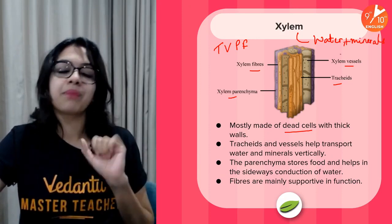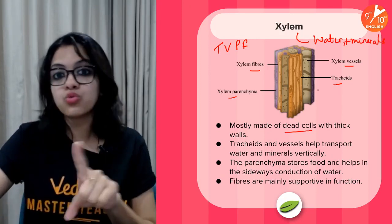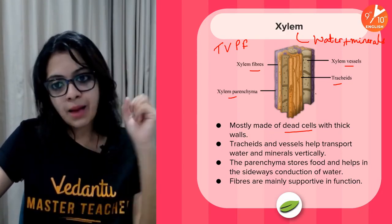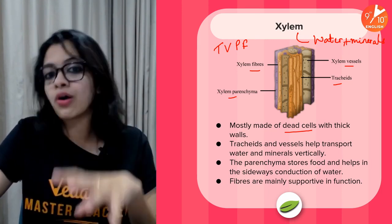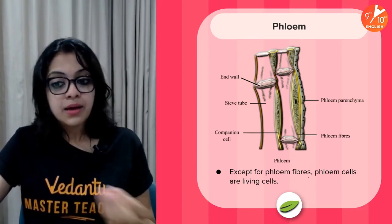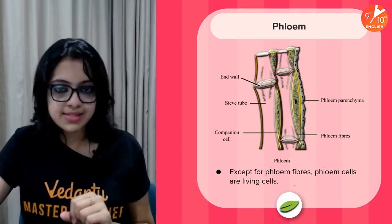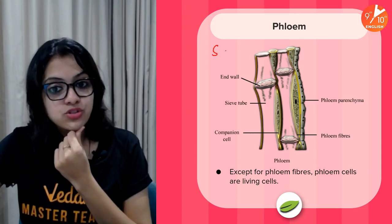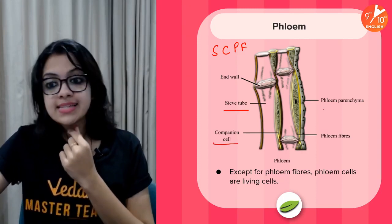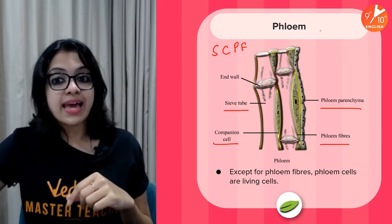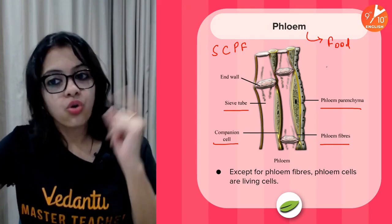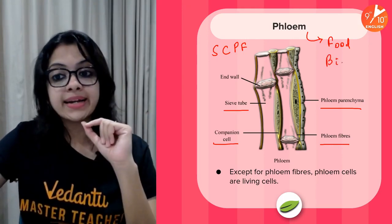Minerals here refers to dissolved minerals taken up from the roots along with water — not the end result of photosynthesis. Now phloem: one major difference is that it mostly has living cells, except for the phloem fibers. Phloem is made up of sieve tubes, companion cells, phloem parenchyma, and phloem fibers — abbreviated as SCPF.